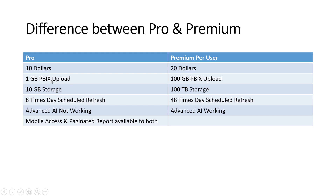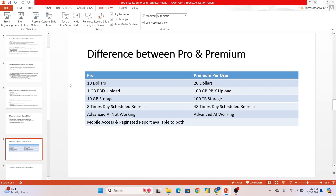There are six to seven differences between Pro and Premium. Pro has a fee of $10 monthly; Premium has a fee of $20 monthly. In Pro, up to around 1 GB (approximately 1.2 GB) PBIX file can be uploaded — beyond that it will not publish. In Premium, around 100 GB PBIX file can be uploaded. Pro has 10 GB of storage; Premium has 100 TB of storage. Pro allows 8 scheduled refreshes daily; Premium allows 48 scheduled refreshes daily.